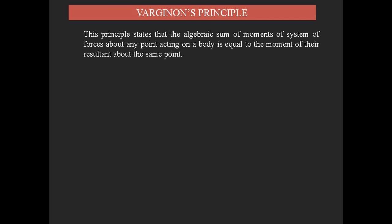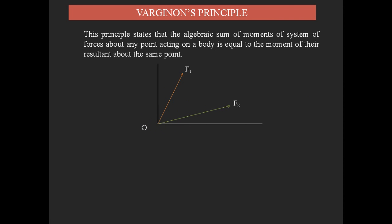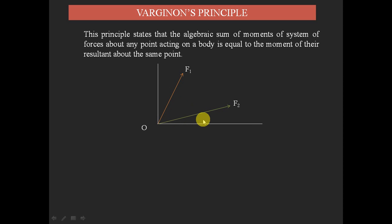Consider a point O where two forces F1 and F2 are acting. According to the statement of Varignon's Principle, the sum of moments of these two forces about point O — where these forces cause a rotational effect — is equal to the moment of the resultant. So the sum of these two individual moments can be replaced by the moment of the resultant of these two forces.